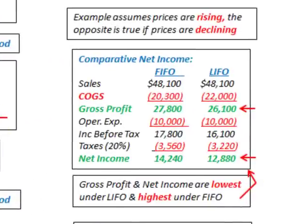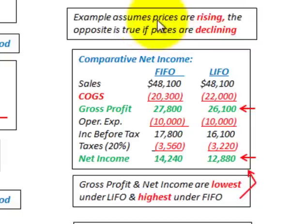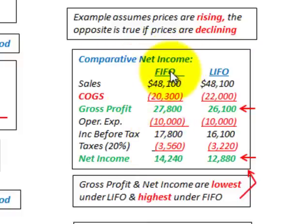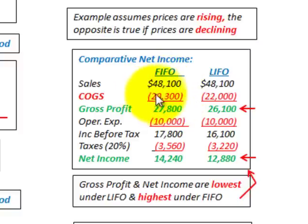Let's look at a comparative analysis for the net income generated based on this example. The example assumes prices are rising — the opposite would be true if prices are declining. Comparing net income between FIFO and LIFO: we had the same sales, but the cost of goods sold differs. FIFO had a lower cost of goods sold of $20,300 versus LIFO's $22,000.